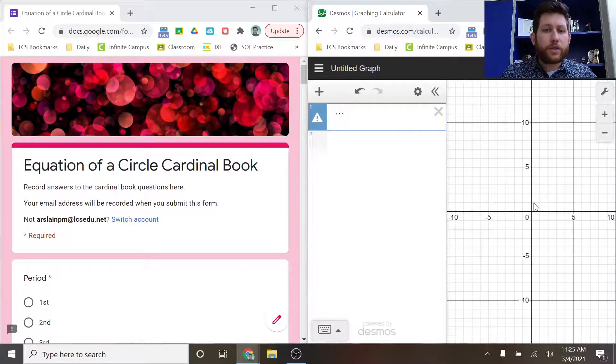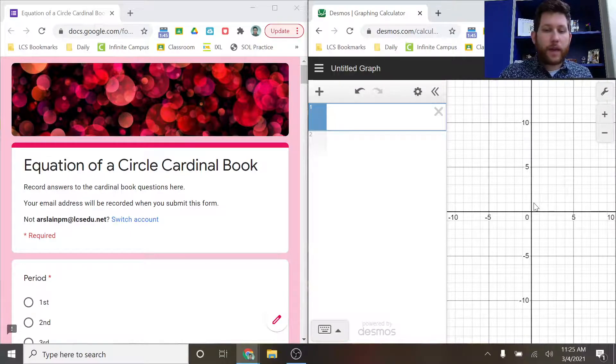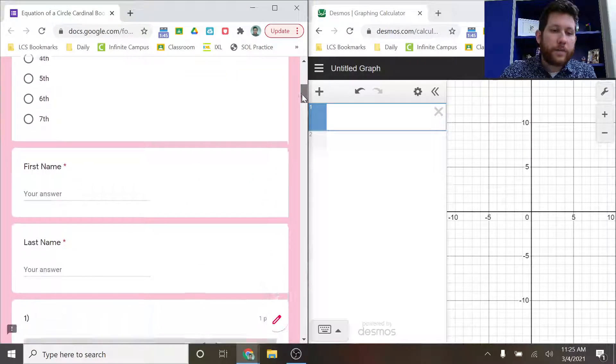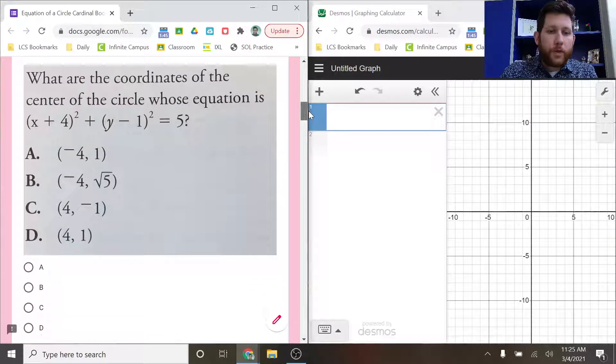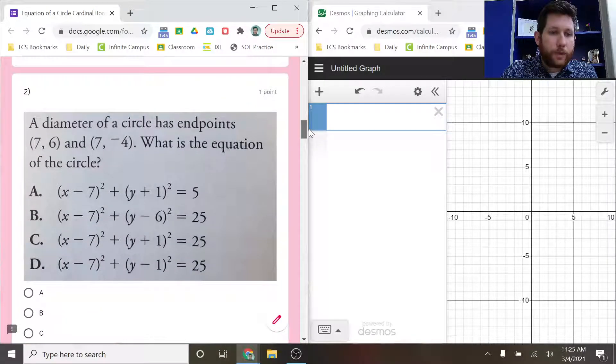So what I want to do is show you how to do a few different types of problems using the equation of a circle and also using Desmos. Let's go ahead and scroll through some of these in this assignment, in this equation of a circle Deltabook assignment. I want to show you, I'm going to skip the first one. I think the first one's pretty straightforward, but let's look at the second one.